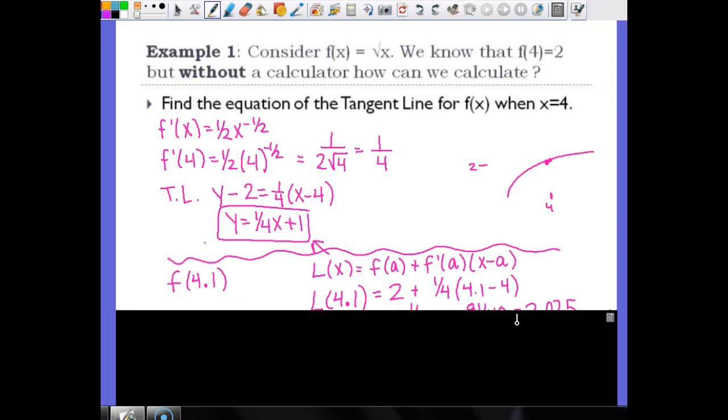We already know all that information. So L(x) would be 2 + 1/4(x - 4). But now, instead of an x, we're going to plug in that 4.1. So what we're going to do is use that linearization problem to find 4.1. So everywhere at an x, I put a 4.1 in. So what's 4.1 minus 4? 0.1.